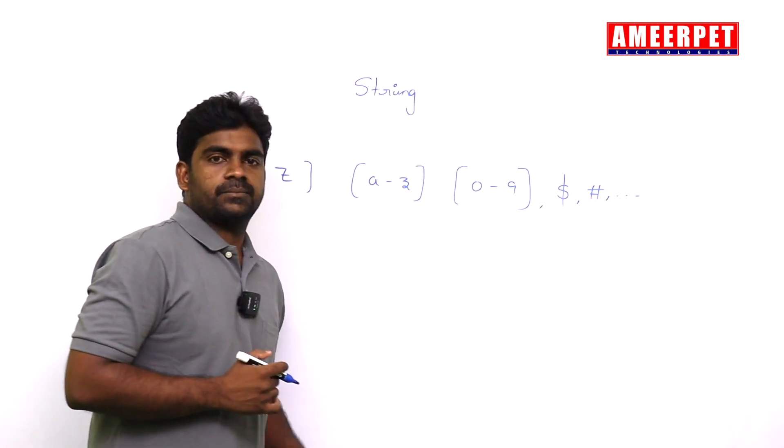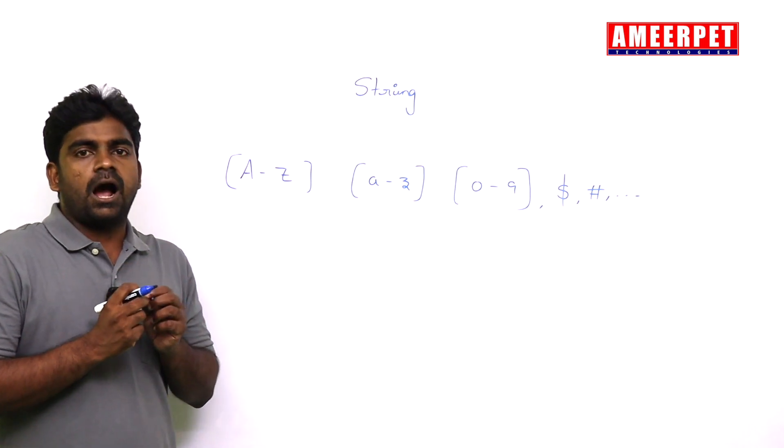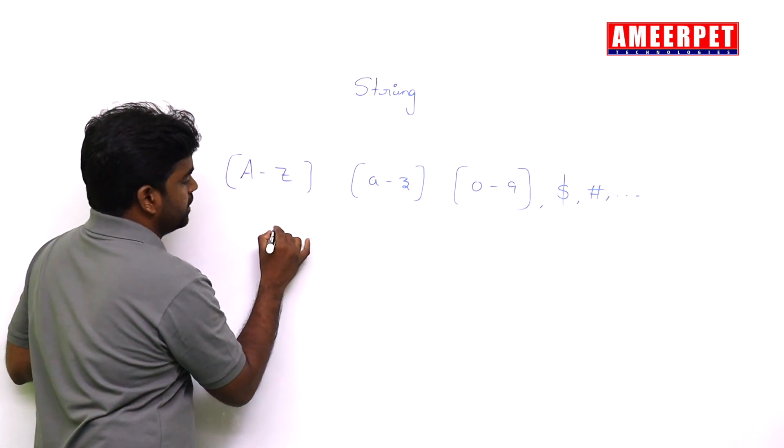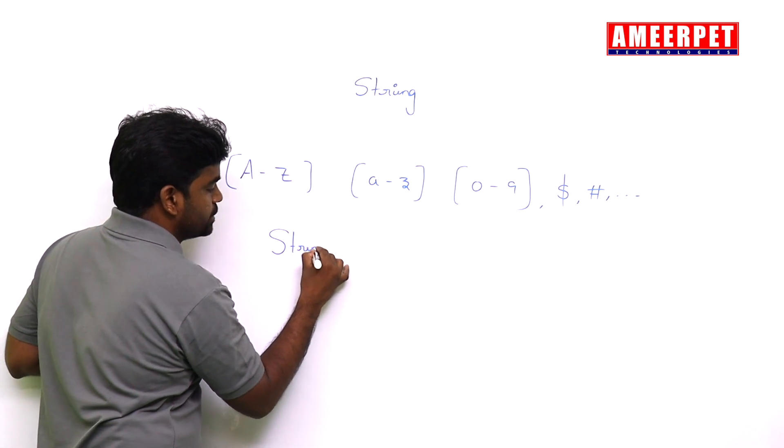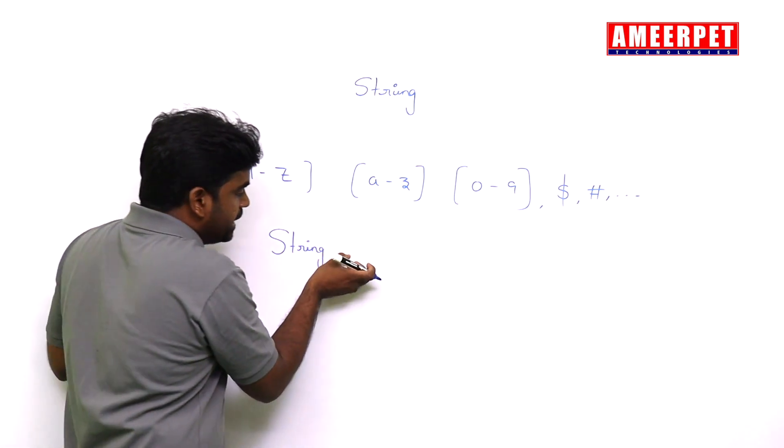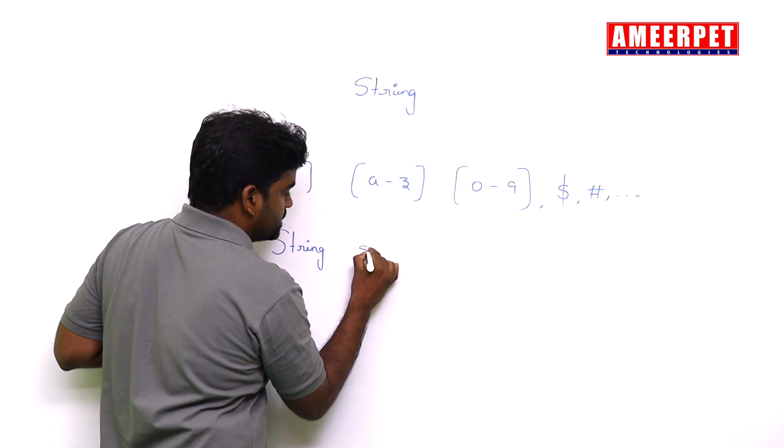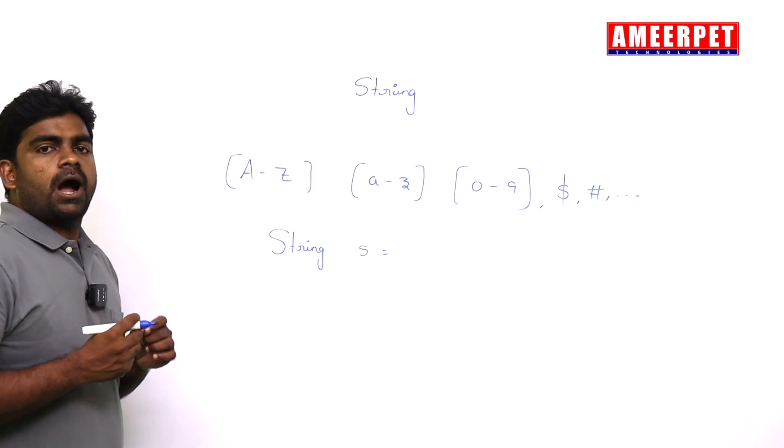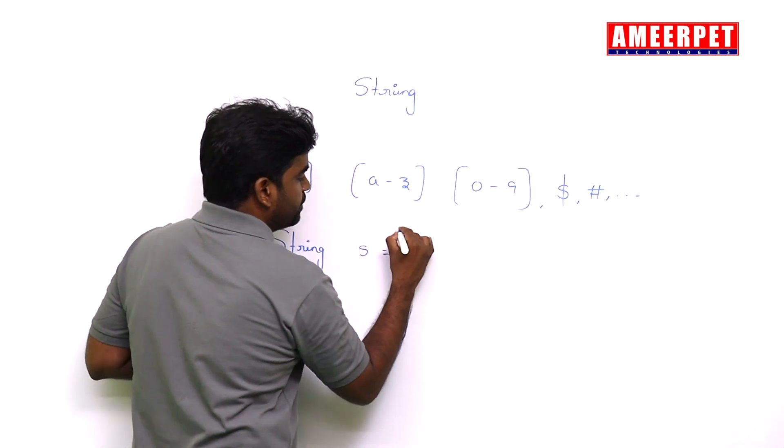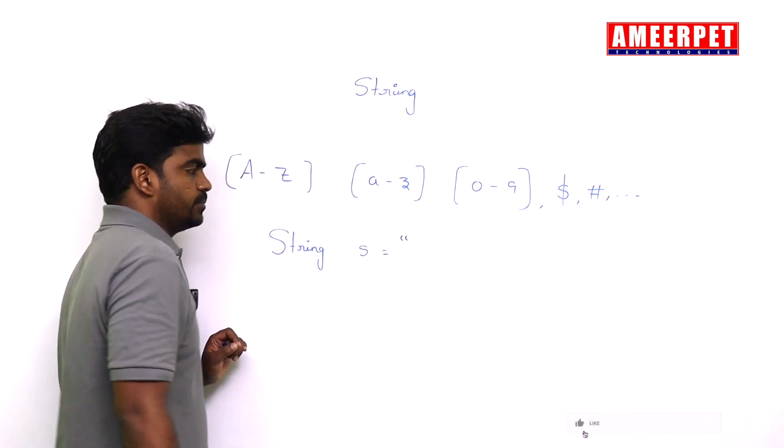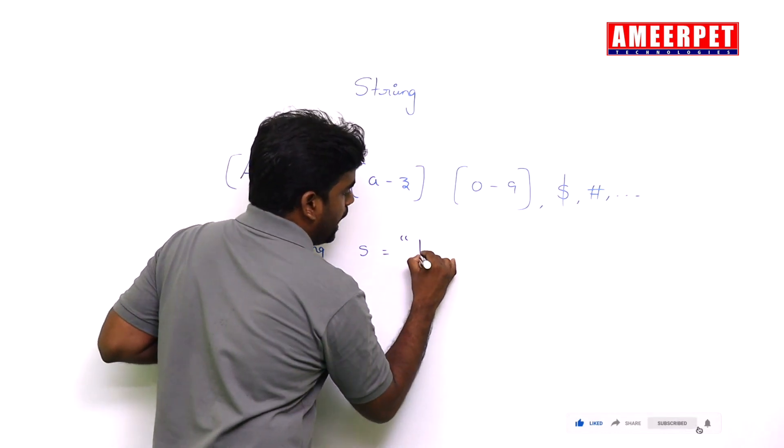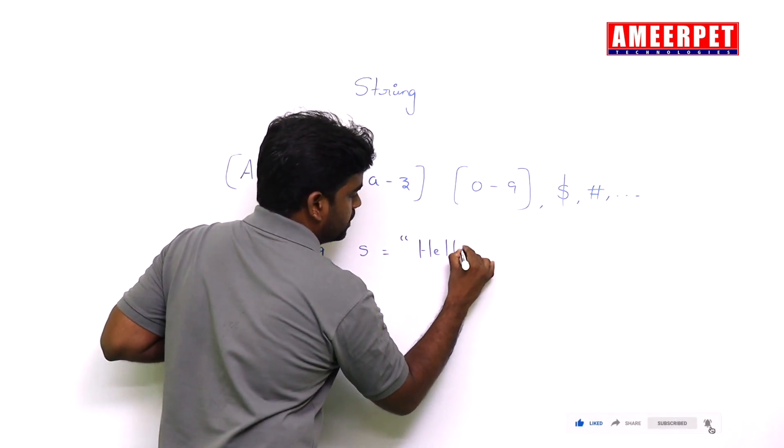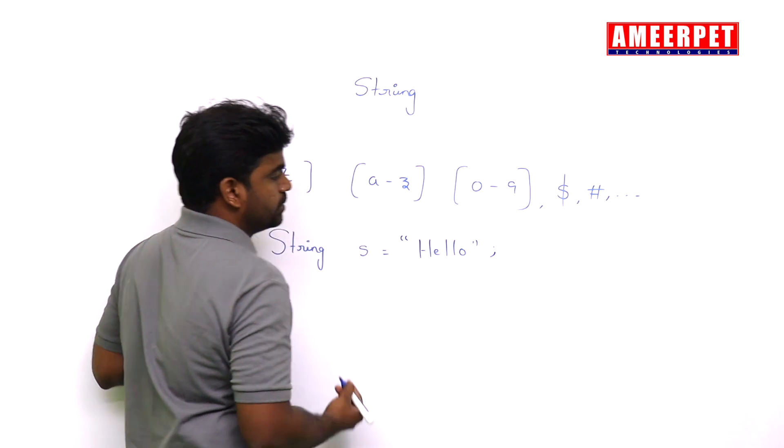A string, how can we represent? In string, here S should be capital letter - String - any variable name you can specify. Suppose S equals to, how can you represent the string? With double quotes, right? For example, Hello is a string.